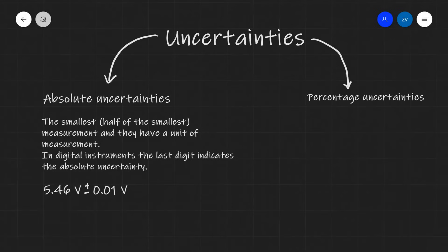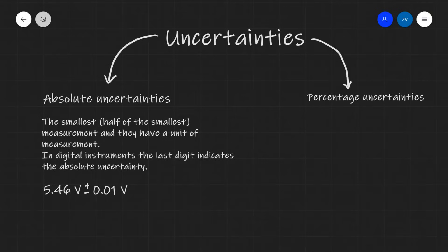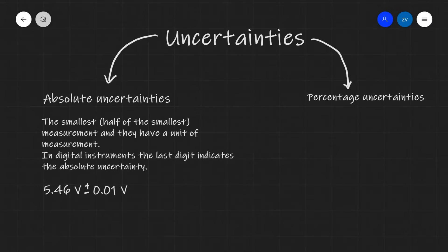There are two types of uncertainties that we need to be aware of. First off, absolute uncertainties. Those are the smallest measurements that can be taken with an instrument. Some exam boards assume that they're half of the smallest measurements, so that's why I've put both statements in. For this video I'm going to assume that they're the smallest measurement that you can take with an instrument.